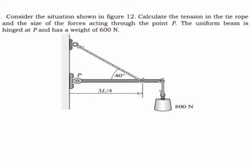Hi friends, we will look at equilibrium — that is static equilibrium — and solve a simple question. Today we have to look at a question which involves finding the horizontal component as well as the vertical component, including the tension in the rope. Looking at the diagram, the only thing we need to concentrate on is how we can resolve the forces acting on the beam.